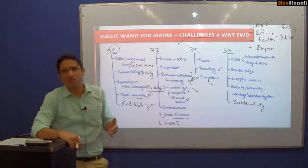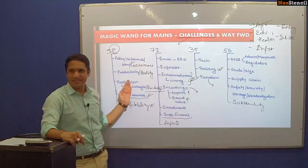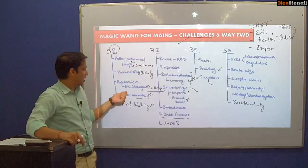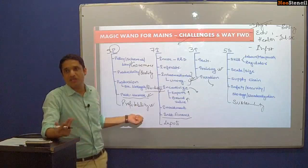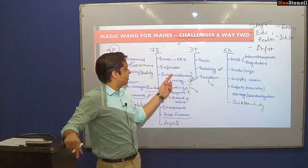Next we have health — the same framework applies. Then infrastructure: policy, schemes, law, and governance is an issue. Production and quality is an issue. Backward and forward linkages — national highways are built but rural roads are not, so connectivity is missing. Post-harvest profitability is a major problem — that is why the private sector is not investing in road or port sectors, and the BOT toll and NUT models have failed, leading to a hybrid model which is also not very successful. Innovation, infrastructure bottlenecks, intermediaries, and incentivization are all problems — across all 20 dimensions, at least 15 apply to infrastructure.